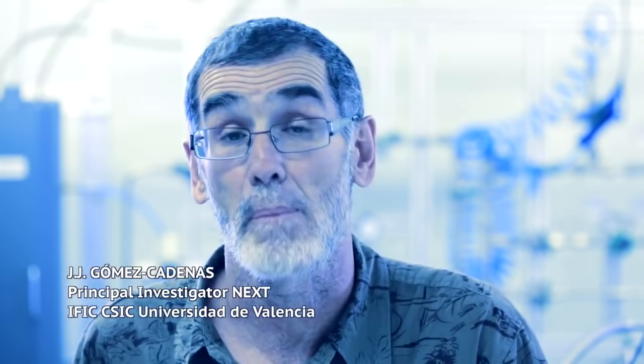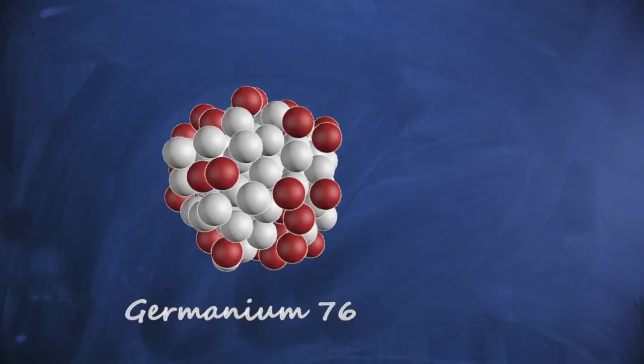Double beta decay is a very rare decay process, so in some sense it's very strange but it has nothing special. It happens in a number of nuclei. What is very relevant is when this decay is produced without the emission of neutrinos. Why is that so? Because it marks the existence of a very peculiar property of the neutrino, the fact that the neutrino is its own antiparticle.